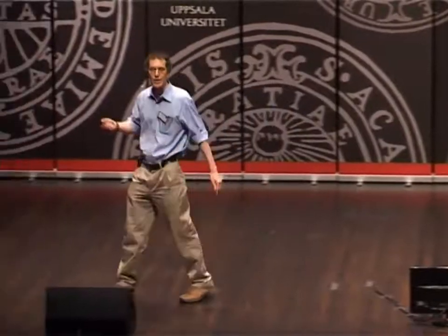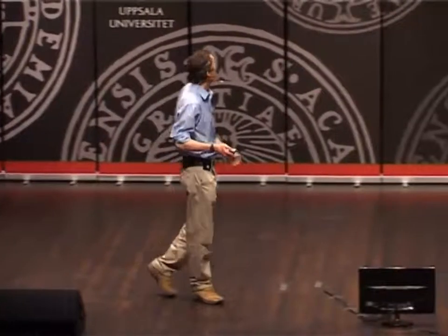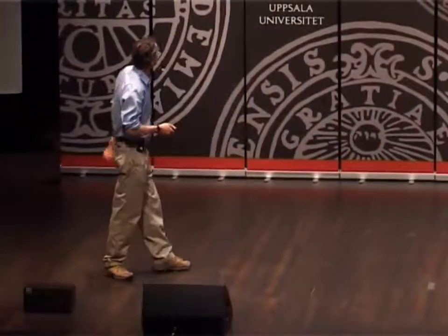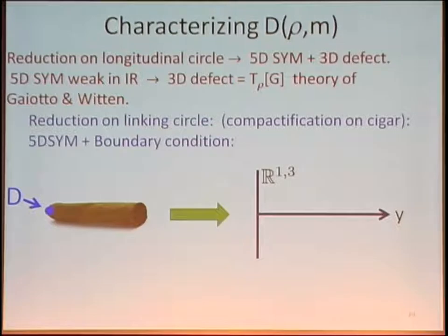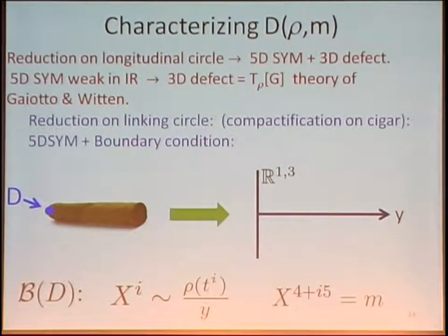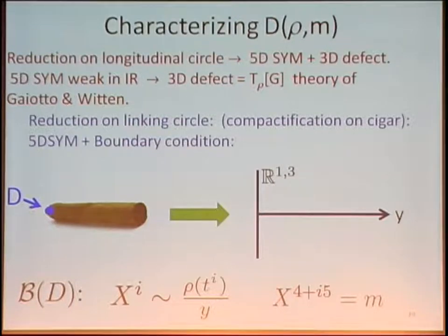How do we think about these defects D(ρ,M)? A good way is to think about compactification on a circle. One thing you can do is compactify on a longitudinal circle — the defect actually wraps the circle — so you get down to five-dimensional super Yang-Mills coupled to a co-dimension two defect. A co-dimension two defect is a three-dimensional object in five-dimensional Yang-Mills. Five-dimensional Yang-Mills is weakly coupled in the infrared, and therefore we are coupling to some superconformal field theory — the theory called T_ρ(G) by Gaiotto and Witten. You can also compactify on a cigar: you put the defect at the end and reduce along the rotational symmetry, getting a five-dimensional theory on a manifold with boundary with Nahm pole singularity boundary conditions on three of the scalars.